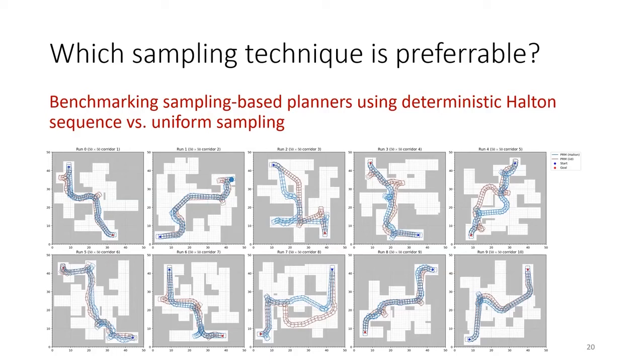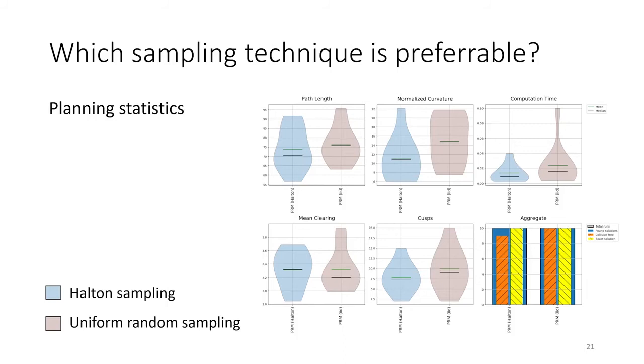The experiments show the advantages of using deterministic over random sampling. PRM with Halton samples achieves better performance in terms of path length, normalized curvature, planning time, and the number of cusps.